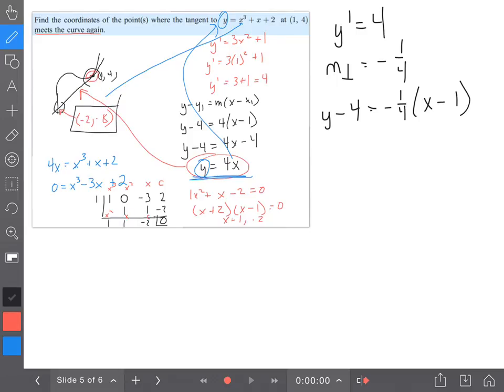We'll go ahead and distribute, so I'll have y - 4. Add the 4, you're going to have y = -1/4·x, add the 4, that'll be 16/4, so that'll be 17/4. Now we got an equation.